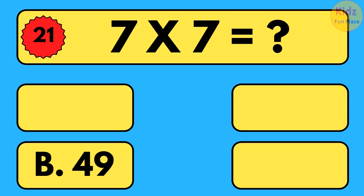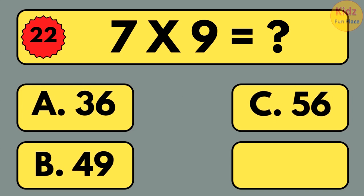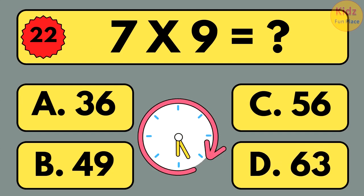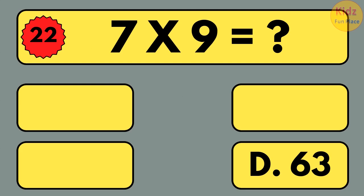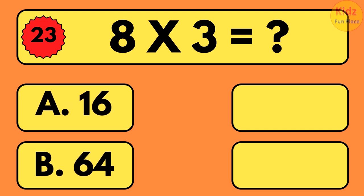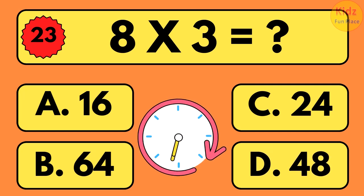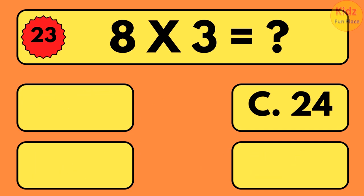7 times 7 is equal to 49. 7 times 9 is equal to what? 6 times 9 is equal to 63. 8 times 3 is equal to what? 8 times 3 is equal to 24.